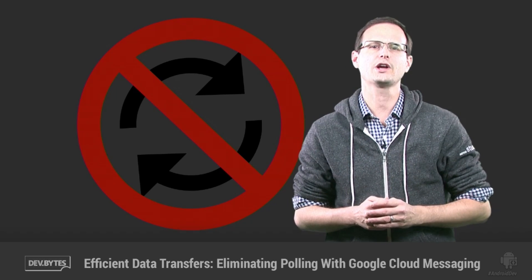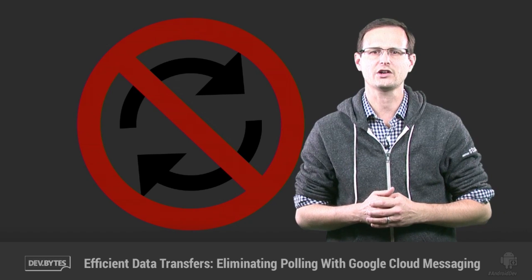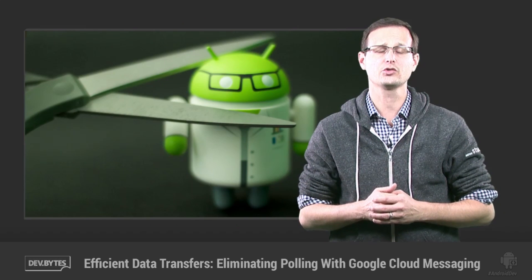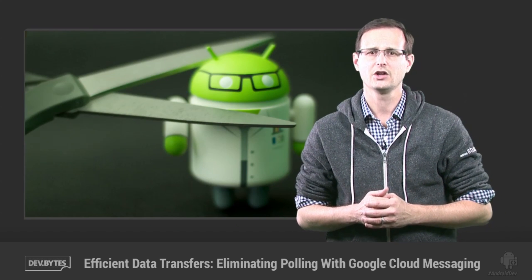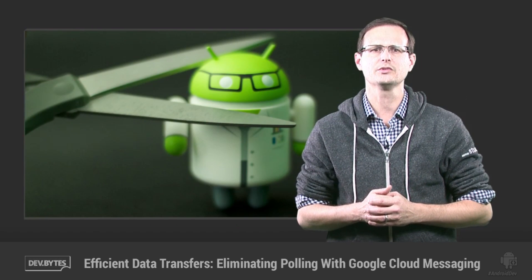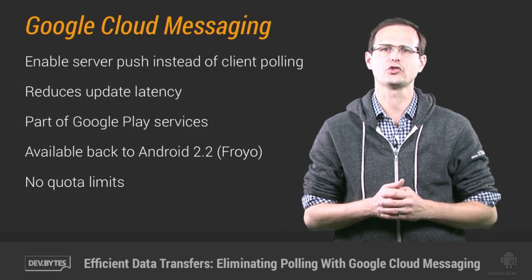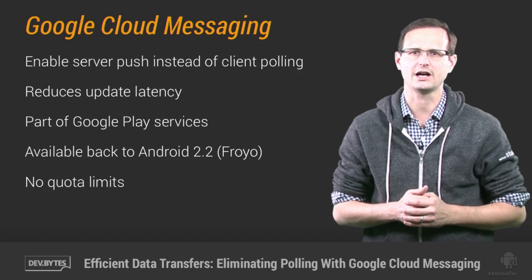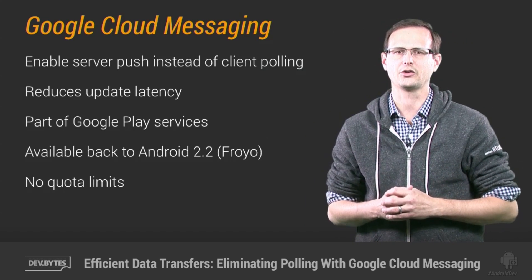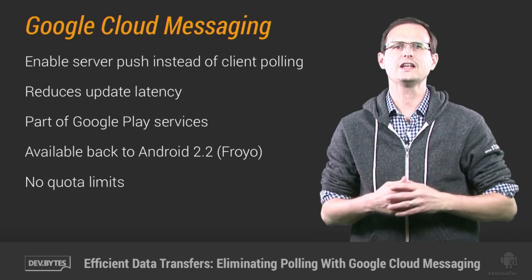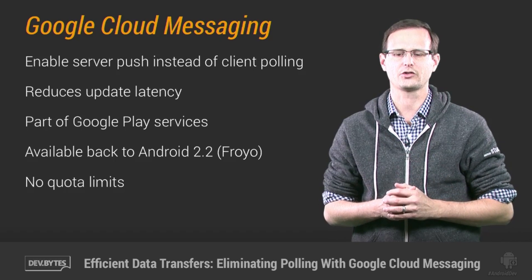In fact, every time you create a repeating alarm to ping your server to check for updates, Sundar kills a bug droid. Stop the slaughter and use Google Cloud Messaging to have your server notify your app when there is data ready to be downloaded, or even include the new data in the message payload itself.